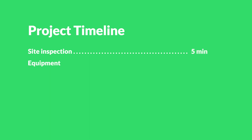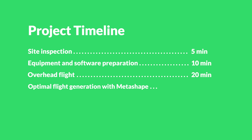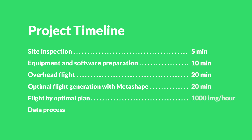The workflow consists of three major steps: capturing images with standard overhead flight, creating a detailed flight plan based on a rough mesh model, and performing image capture according to the planned waypoint mission.